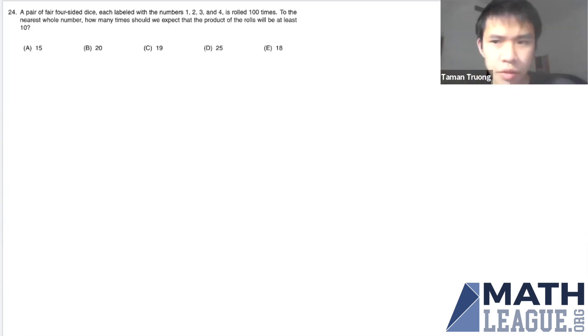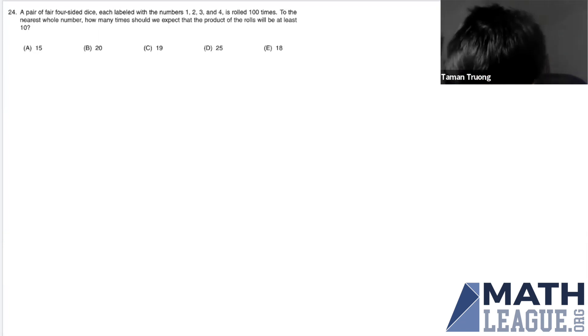So this is a kind of expected number problem. We need to find the probability that we get the product of the rolls to be at least 10, given a pair of fair four-sided dice. So let's just make a table. Since we don't have a lot of numbers to work with, it's probably the simplest approach.